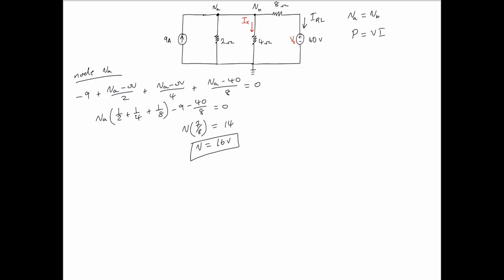Now we can find IX using Ohm's law. So IX is equal to VB over 4 ohms. VB is equal to VA, so 16 over 4, we get 4 amperes.